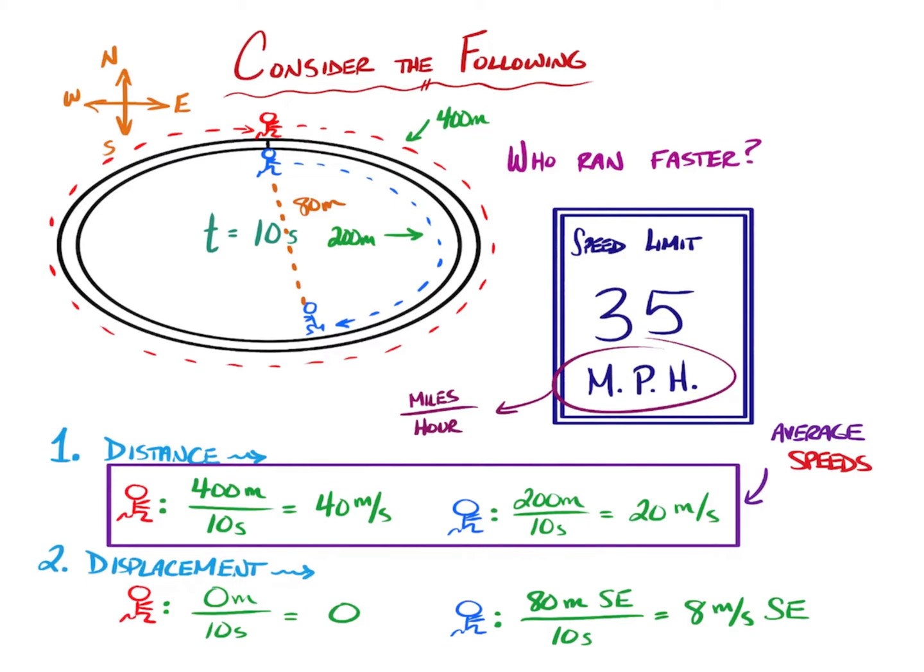Those are known as the average speeds of the runners. And the bottom values, the rate at which they were displacing themselves, is what is known as the average velocity or the average velocities of those runners.